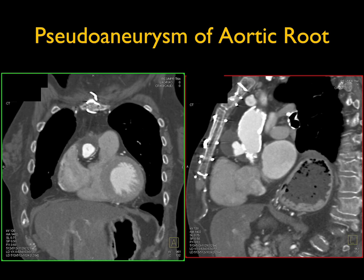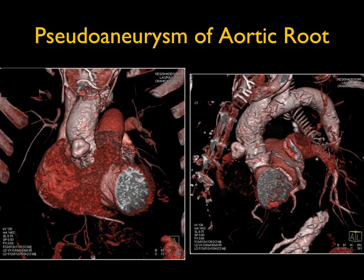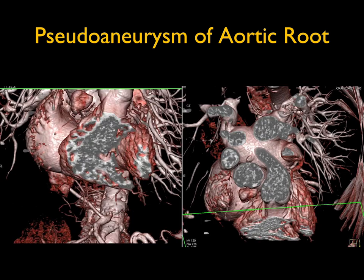Pseudoaneurysms can occur at trocar sites, at sites of surgery, and in patients who've had ascending aortic repair or valve repair — not an uncommon complication. You need to be aware of these because they are concerning for the possibility of rupture and bleeding, so patients will likely need surgery. It is very nicely shown on the cinematic and volume rendering — a real nice example of that outpouching through a range of projections.